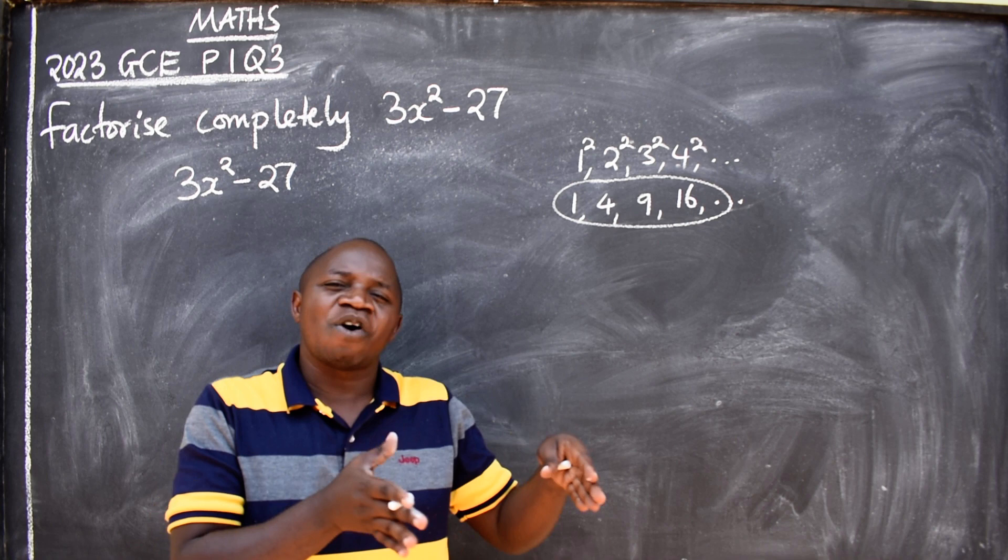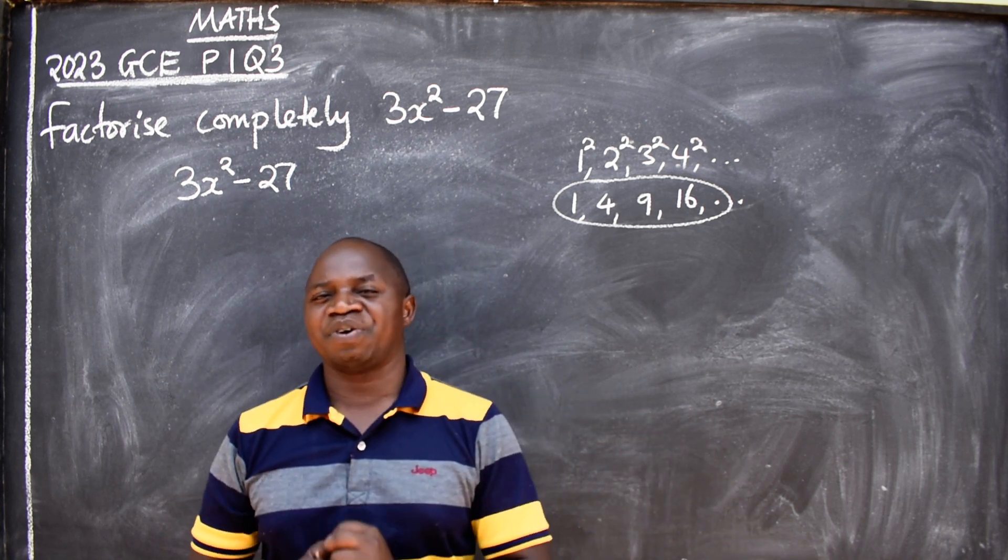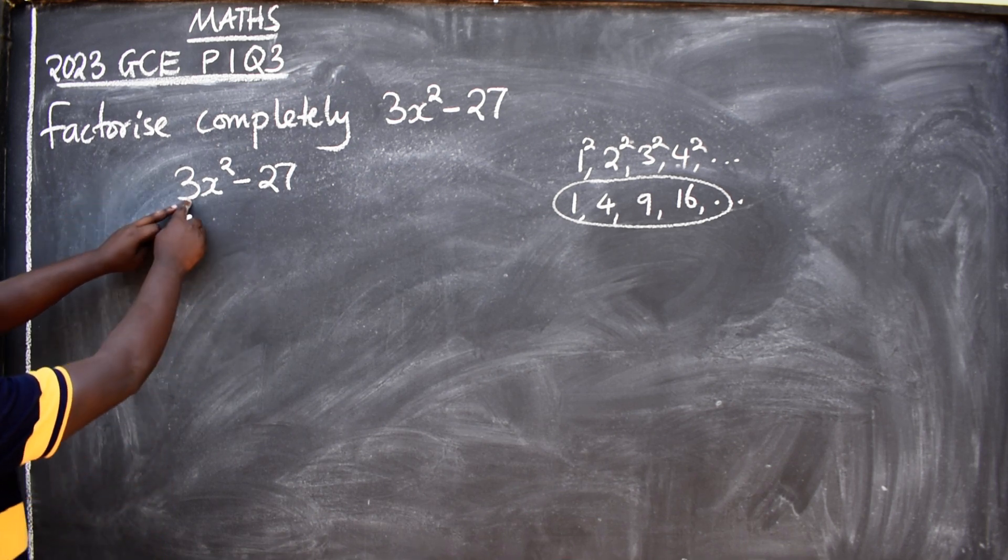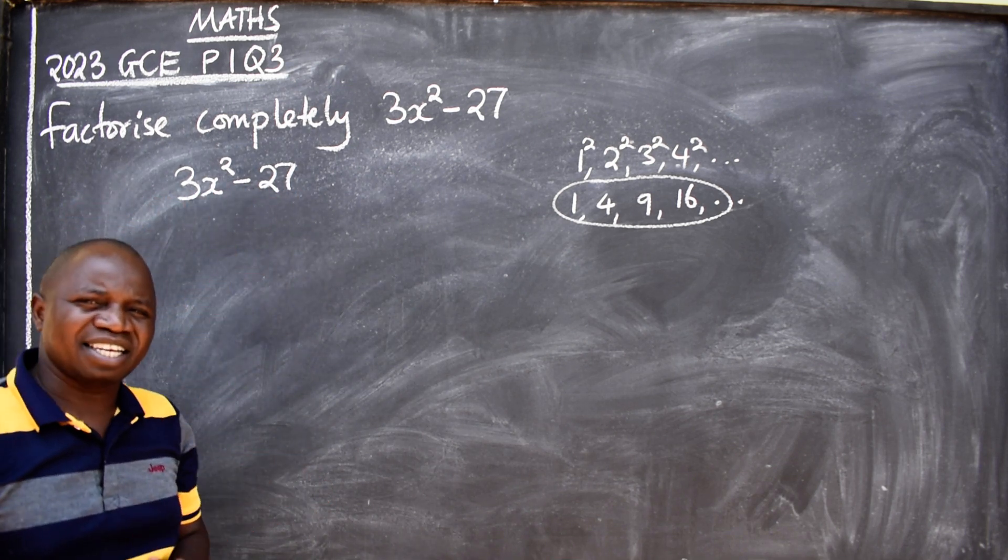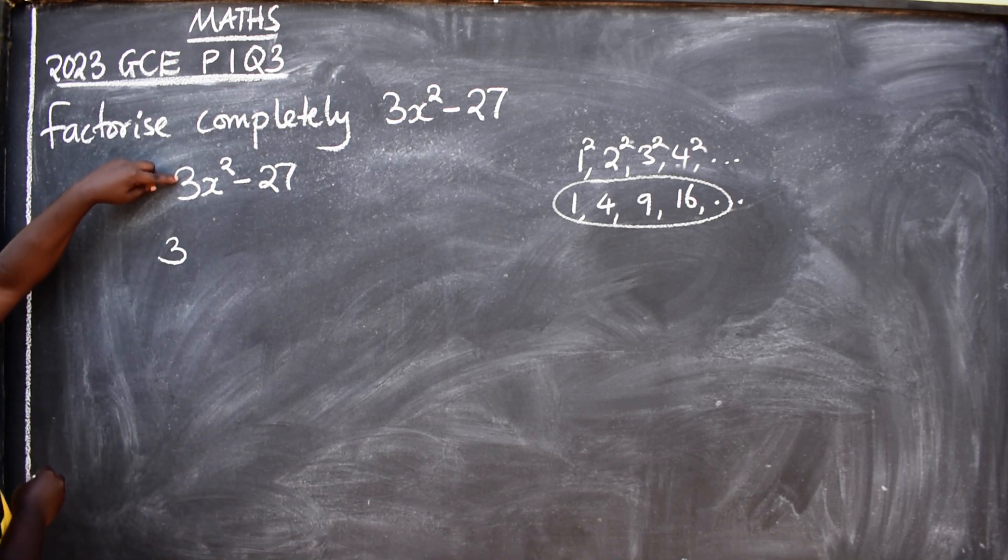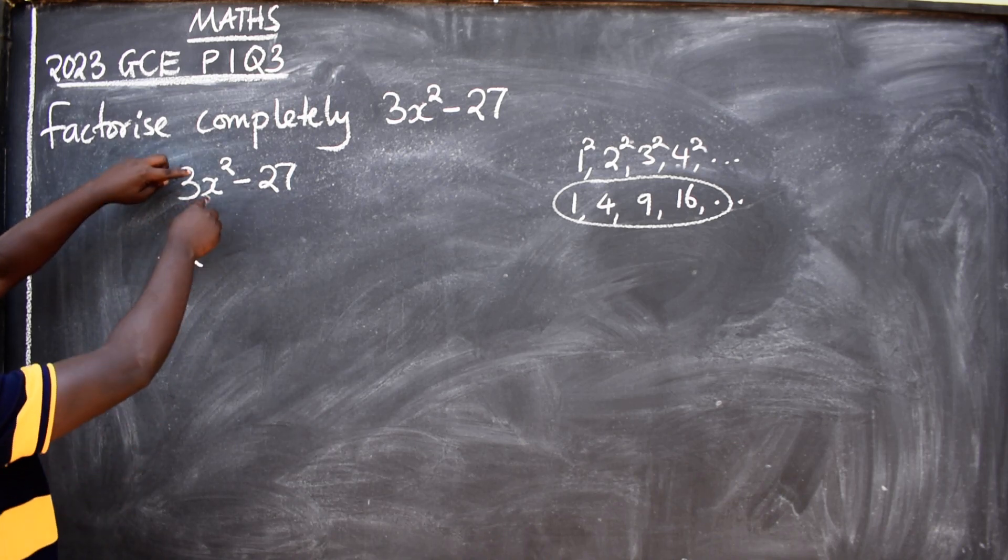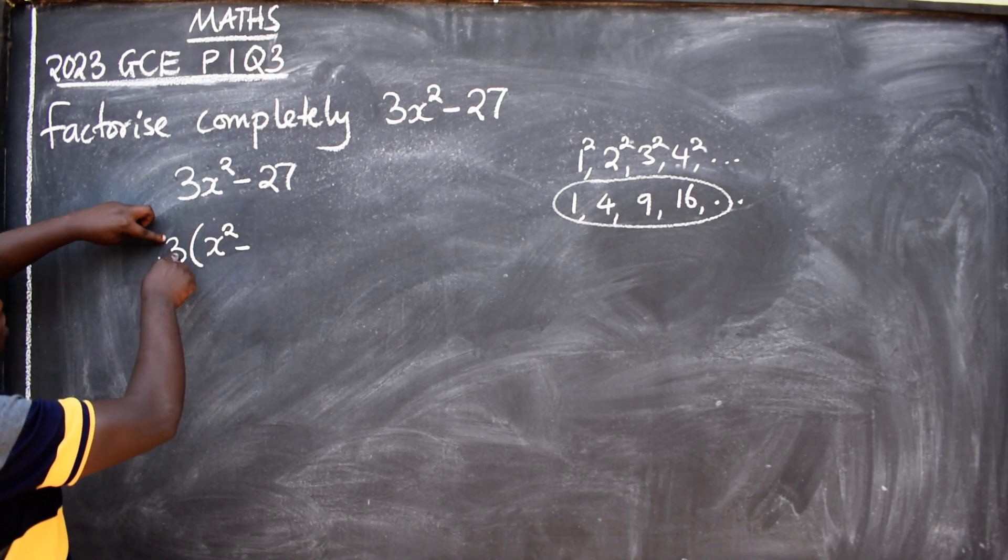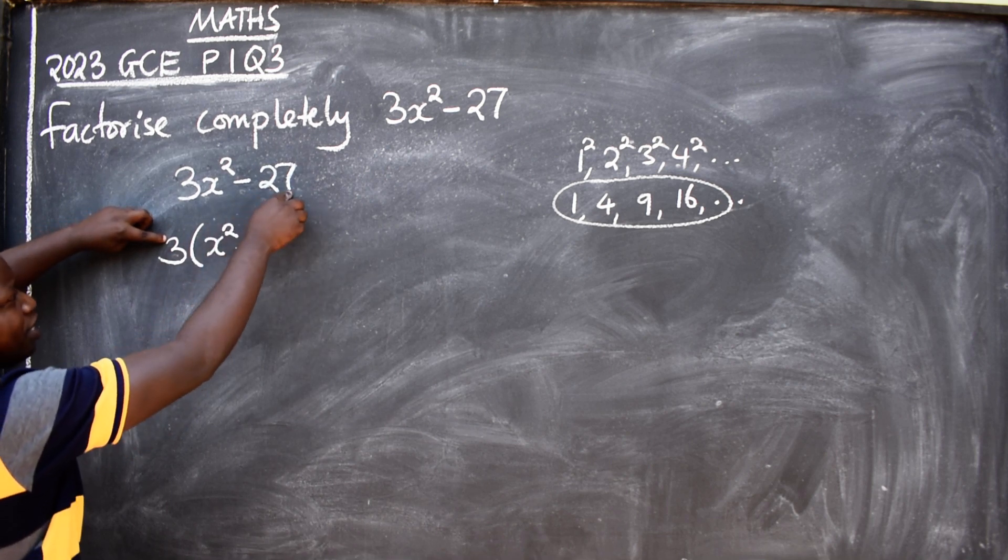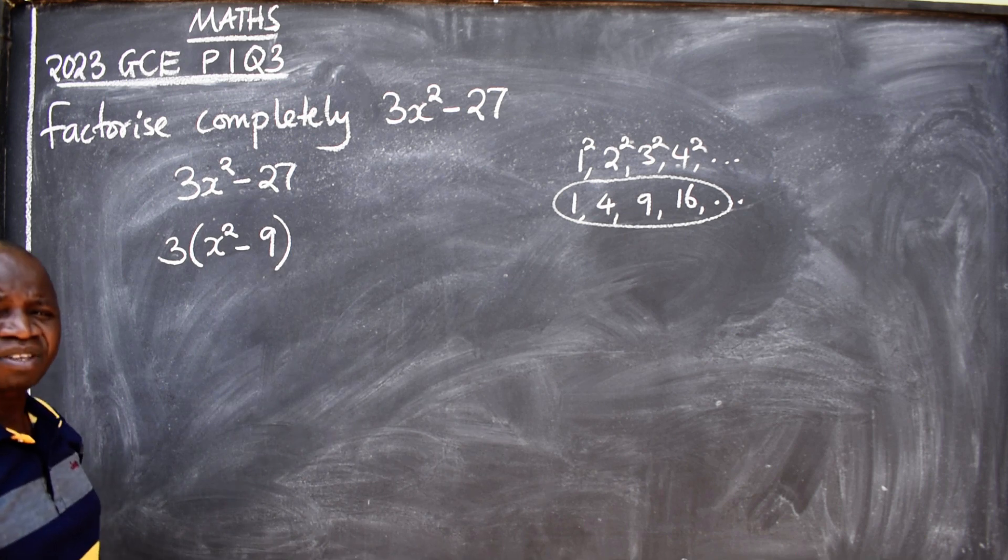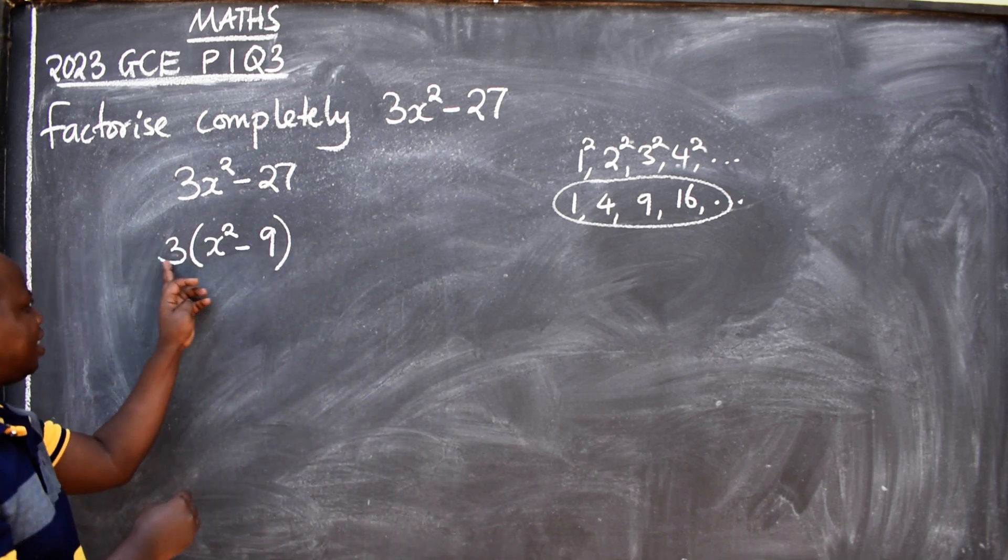Common factorization is you look at the two terms - what is common on both sides? Three. Open brackets: 3 into 3 is 1, so I'll remain with x². Minus, 27 divided by 3 here will give me 9. See that, that is common factorization. But is it done? No, we are factorizing completely.